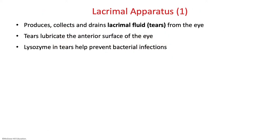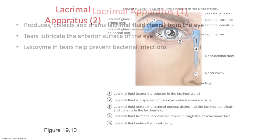Now let's look at the lacrimal apparatus, which produces, collects, and drains lacrimal fluid — tears — from the eye. Tears are extremely important for lubricating the anterior surface of the eye. Your tears contain an enzyme called lysozyme that helps prevent bacterial infections in your eye, so there's a constant cleaning system going through your eye all the time.